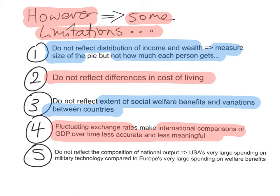National income statistics also do not reflect the composition of national output. They reflect the size of the pie, but not what's making up the pie — what are the ingredients? For example, the United States has very large spending on military technology compared to Europe, which has very large spending on welfare benefits. There are obviously arguments about which is better to spend on, and that's not reflected in national income statistics.